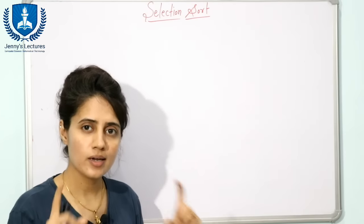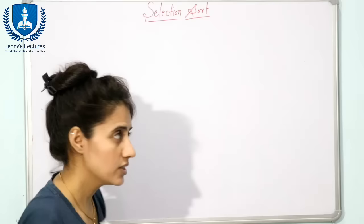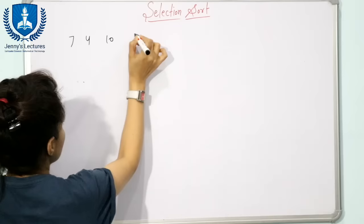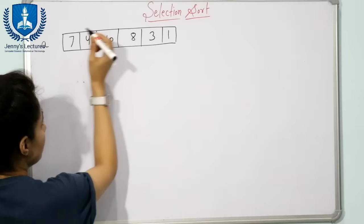We have one array and we are going to sort that array applying selection sort. Sorting means by default we are going to sort the array in ascending order. Now let us take one example. Suppose the array has six elements and the name of this array is 'a', with indices starting from 0 to 5. N is equal to 6.